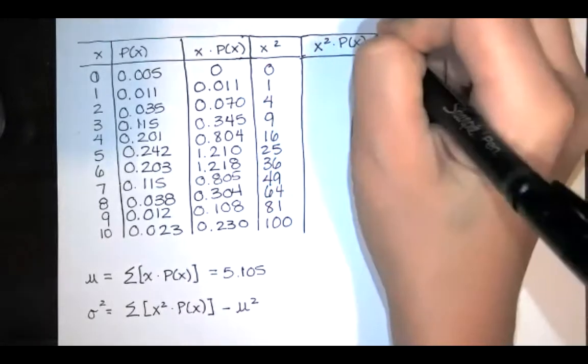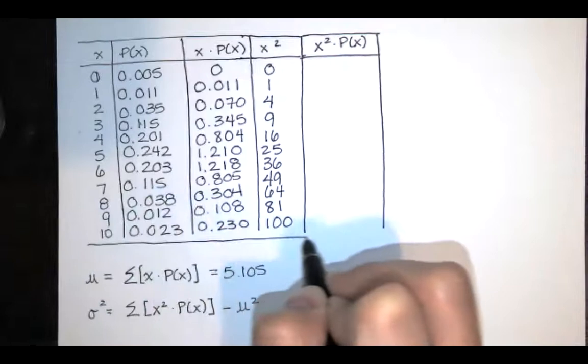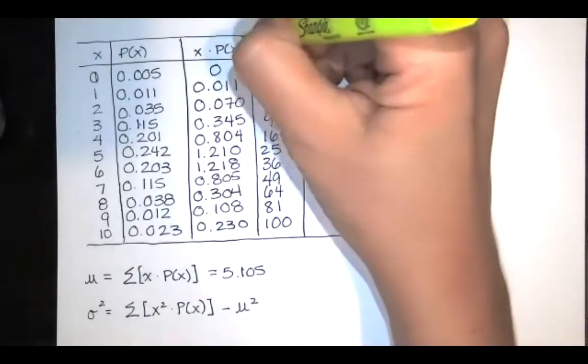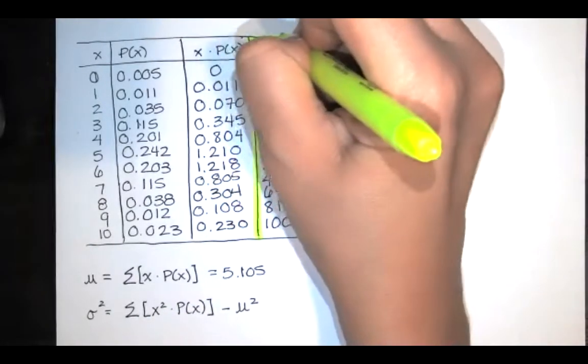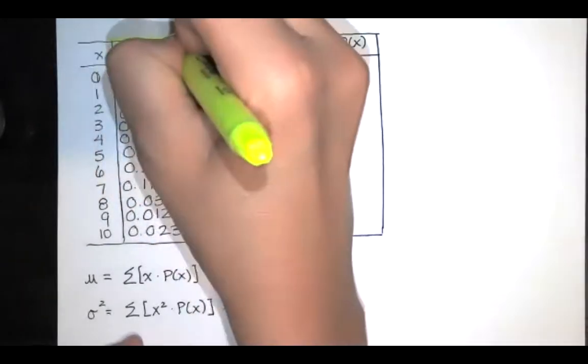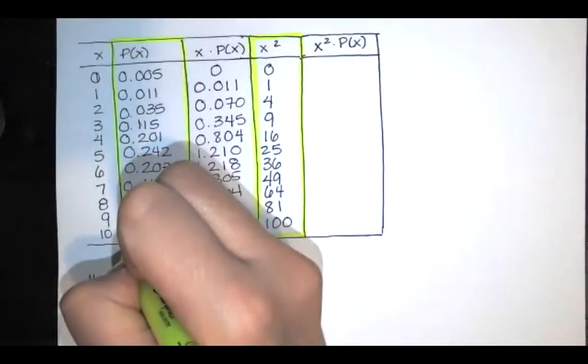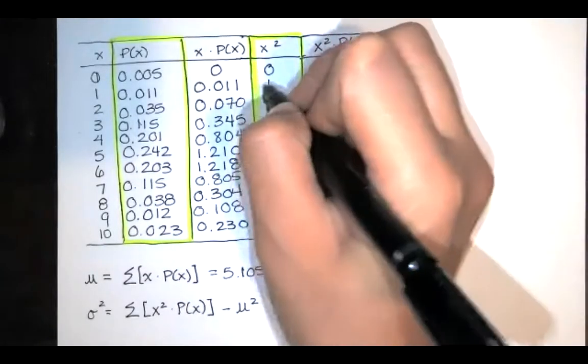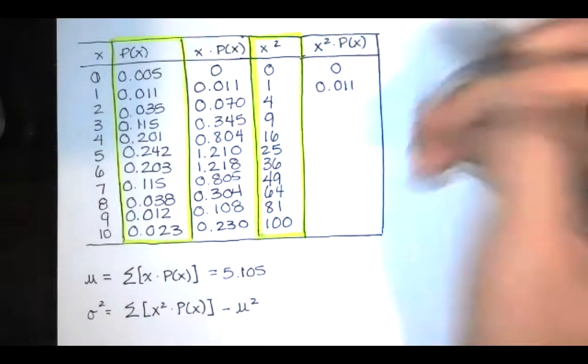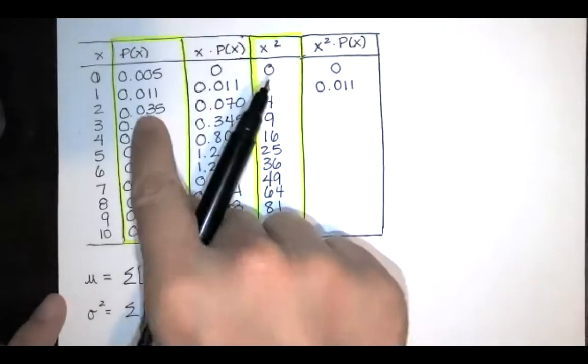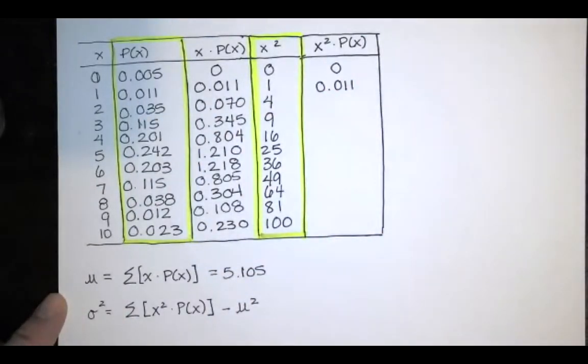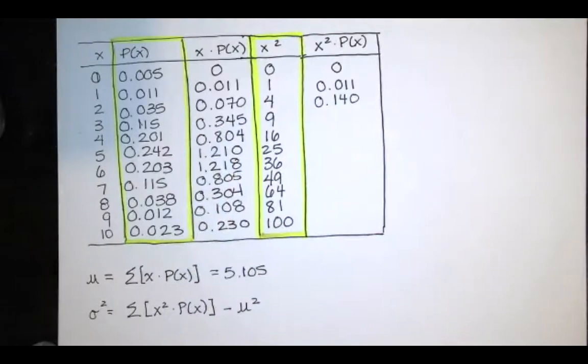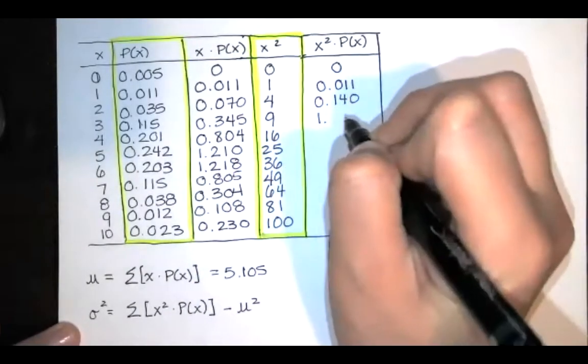So you want to be very careful. Make sure you multiply by the right thing. So we're taking the x's squared, which are in this column, and we're multiplying those by the probabilities, which are in this column. Now it's much faster in Excel. So you can do this in Excel if you prefer. So you have 0 times that, which is 0. 1 times that number, which is 0.011. Then I've got 4 times that 0.035, that's 0.140. 9 times that number, that's 1.035.